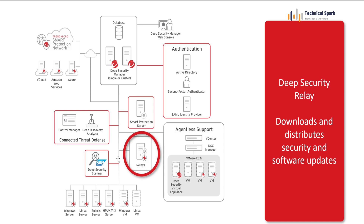When you install the Deep Security server, you must have a relay server. The relay server improves performance by distributing the task of delivering updates throughout your Deep Security installation. The agents on your machines receive definitions from this relay server — the relay server distributes all definition-related work so that your end servers get the latest definitions. You can configure multiple relay servers in your environment, and you can even configure any existing agent-installed server as a relay server.